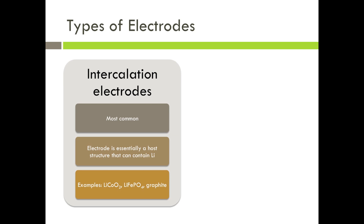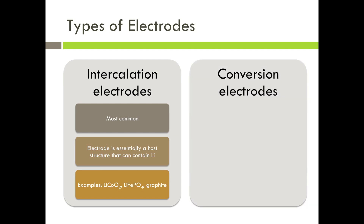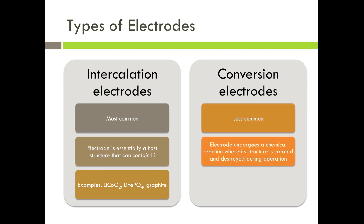Another type of electrode material are conversion electrodes. They are less common and they function by undergoing a chemical reaction where the electrode structure is created and destroyed during operation. Examples of conversion electrodes are iron fluoride and lithium peroxide, which is formed during the operation of a lithium-air battery.